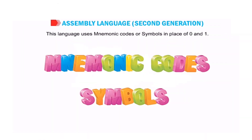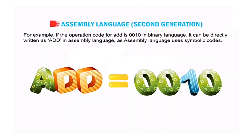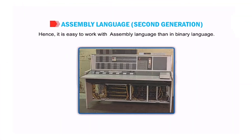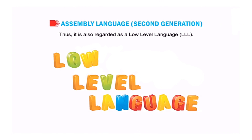Assembly language uses mnemonic codes or symbols in place of zero and one. For example, if the operation code for add is 0010 in binary, it can be directly written as 'add' in assembly language. So 'add' is nothing but 0010 in machine language. Clearly, it's easier to work with assembly language than binary language. Assembly language is also machine dependent like machine language, and programming in it is quite time-consuming. So assembly language is also regarded as low-level language, or LLL.